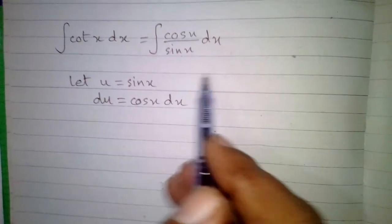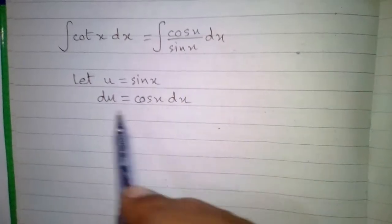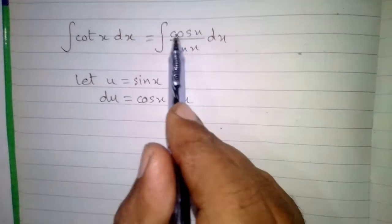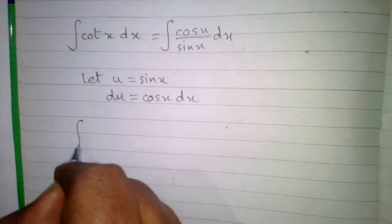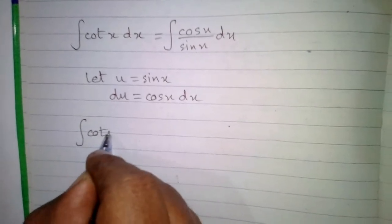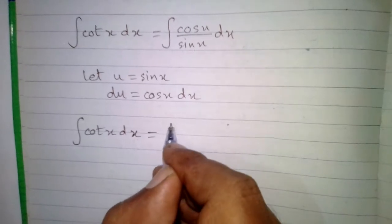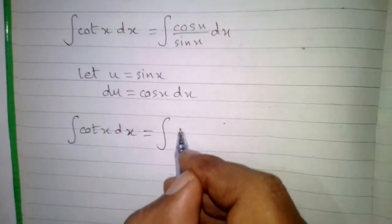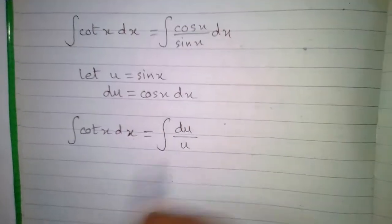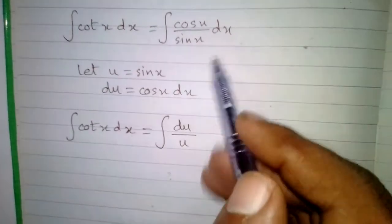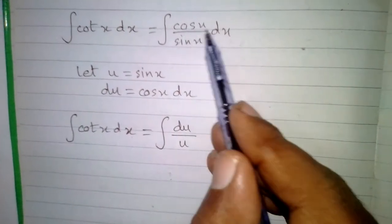Now we can put u in place of sine x and du in place of cos x dx. So the integral of cot x with respect to x is equal to du upon u, where we put du in place of cos x dx and u in place of sine x.